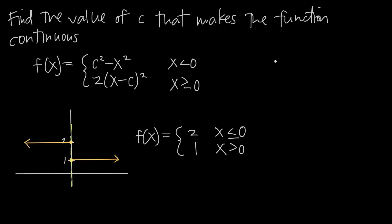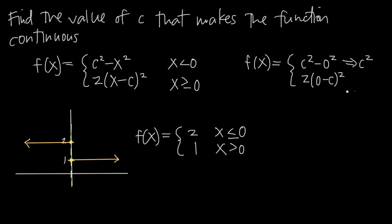So now we're going to plug x equals 0 into the function. We're going to get c squared minus 0 squared for the first piece, and 2 times the quantity 0 minus c squared for the second piece. Simplifying: 0 squared is 0, so c squared minus 0 gives us c squared. For the second piece, 0 minus c is negative c, and negative c quantity squared is positive c squared, so this becomes 2c squared. We want to find the value of c that makes these two expressions meet at the same value when x equals 0.